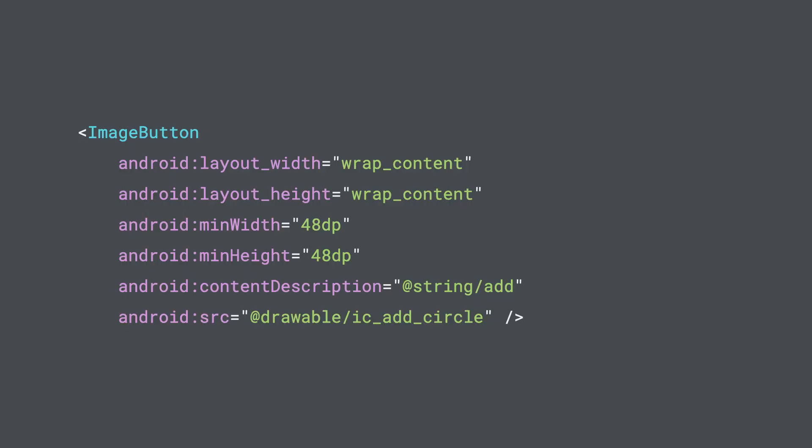Let's get into Android Studio and try to make this image button more accessible. Approach 1: you can add an Android minWidth and an Android minHeight of 48 dp or greater. When you do this, both the scanner and Studio warnings will disappear. Note this may make the icon larger.